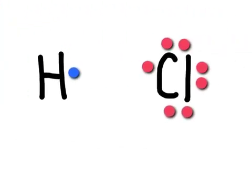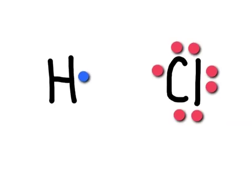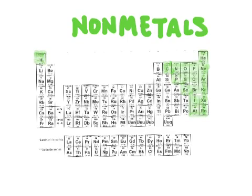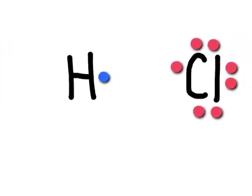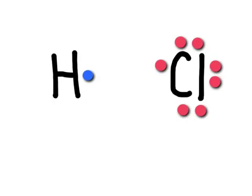Here are the electron dot structures for these two elements. Non-metals want to steal electrons — they want to pull electrons away from other elements. If we bring two non-metals together, they're both trying to pull on each other's electrons and they can't do it. Because they're both non-metals, they can't steal those electrons. They both want to obey the octet rule: chlorine wants to have eight electrons, and hydrogen, since it's in the first period, only needs two electrons in its valence shell. So they're at an impasse — they can't steal the electron from the other element.